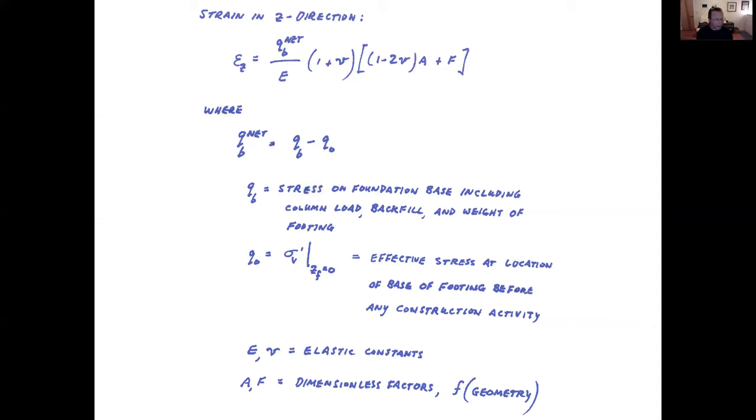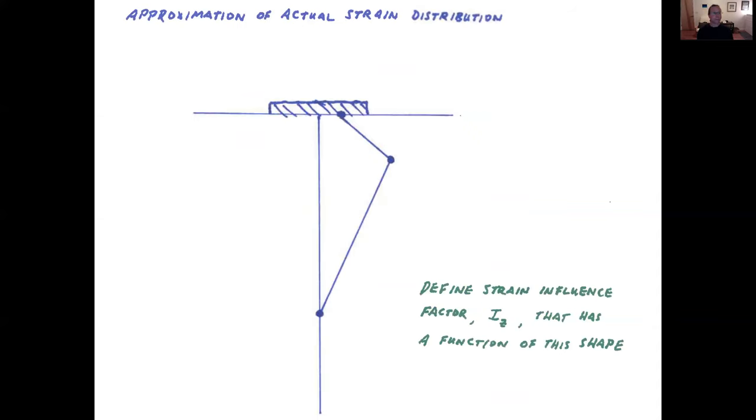So the modulus and Poisson's ratio are elastic constants, and the A and F are dimensionless factors which are a function of geometry. The approximation of the actual strain distribution, we can draw a triangular type shape, or at least bilinear representation of that. You saw the red curve a few slides back. This is a simplified version of that. And what we're going to do is define a strain influence factor, IZ, that has a function taking on this shape. So that is at the heart of the Schmertmann method.